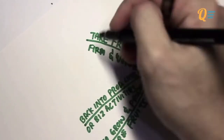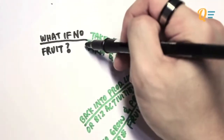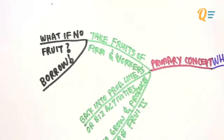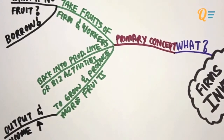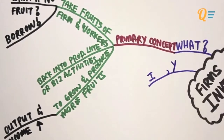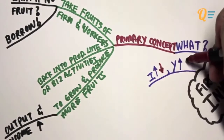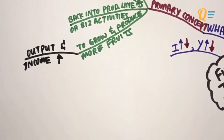What if you face the problem of not having enough fruit to invest into your business activities or production line? You can simply borrow from another source — like borrowing cash from the bank to buy more machinery or materials for your production. By understanding the primary concept of investment, what you should see is a positive relationship between the amount of investment and national output or income. When investment increases, national output is going to increase, and vice versa.